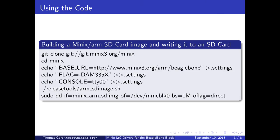Everything mentioned on the previous slide has been merged into the official MINIX repository. To use the fruits of my labor, you just have to use a recent version of MINIX. Here are the instructions to get MINIX up and running on the BeagleBone Black and the original BeagleBone. For the BeagleBoard XM, see the MINIX wiki at wiki.minix3.org for build instructions.